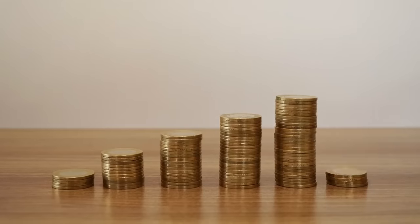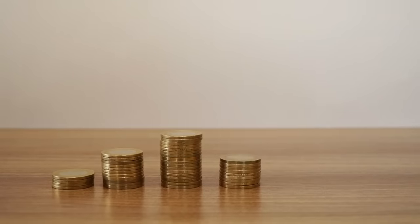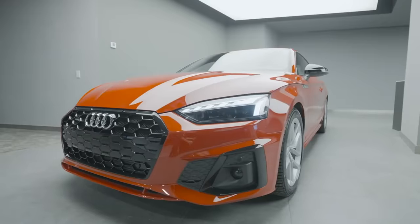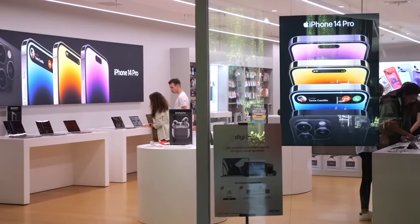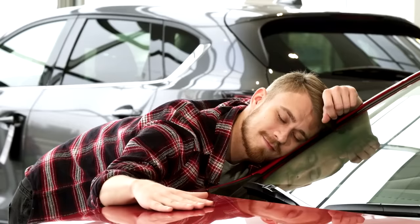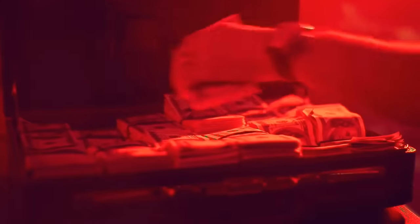Think of it like this. Liabilities are things that lose value as soon as you buy them, like a brand new car or a high-end smartphone that becomes outdated quickly. These things might make you happy for a little while, but they take money out of your pocket in the long run.